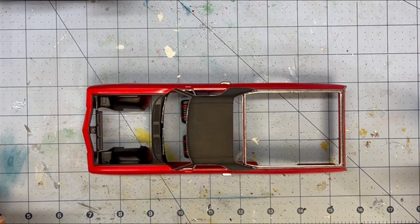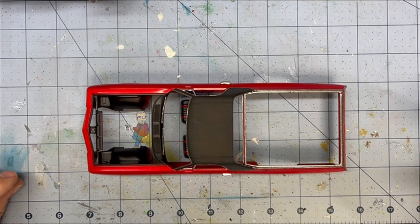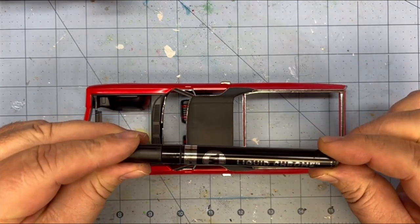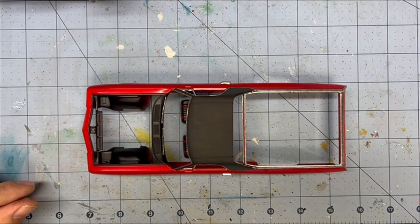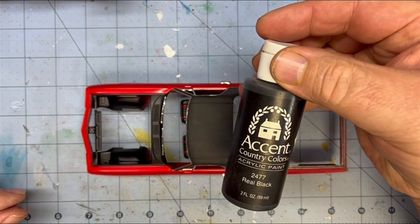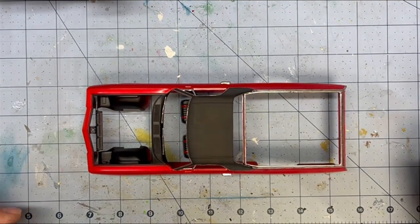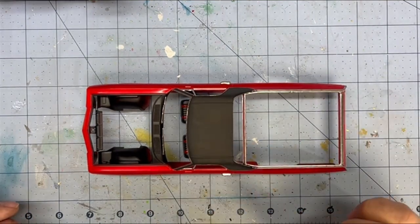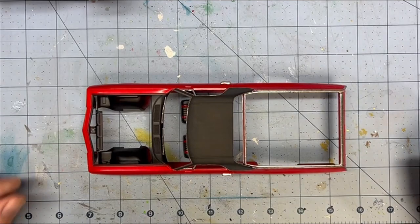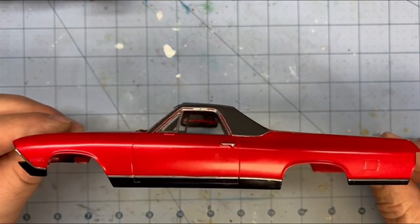The other day I spent a lot of time putting on a lot of chrome. I didn't realize how much chrome was on a 68 El Camino until I started using my Molotow pen to chrome it up. So first thing I did is I put a second coat of the Accent Country Colors Real Black on the roof. I did thin it out just a smidge and I think it laid down beautifully smooth on there. So I did the roof with it and then I did the Molotow pen all the way around. Got a nice bead in everywhere.